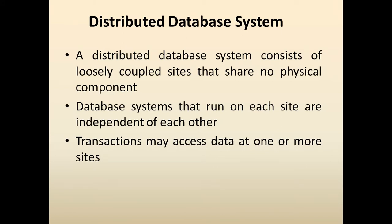A Distributed Database System consists of loosely coupled sites that share no physical component. Distributed means fragmented or partitioned — the database is broken into different clusters so that you will be able to perform the task easily. The database systems that run on each site are independent of each other, and transactions may access data at one or more sites.